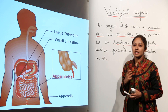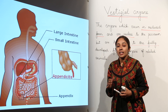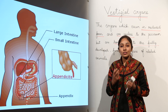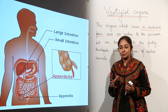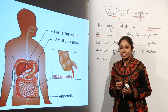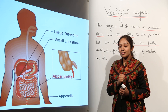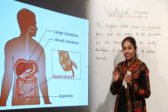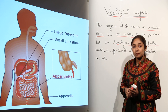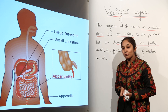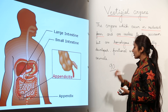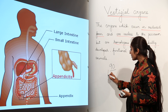Let us talk about the human body. We study vestigial organs in humans because they are important in understanding theories of evolution. Initially, scientists reported around 90 vestigial organs in the human body, but now this number has been reduced.